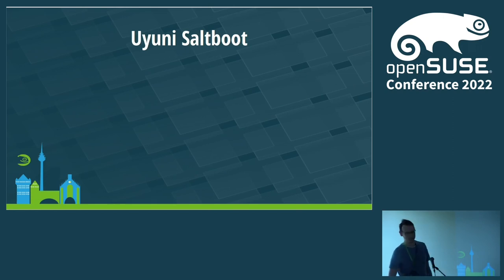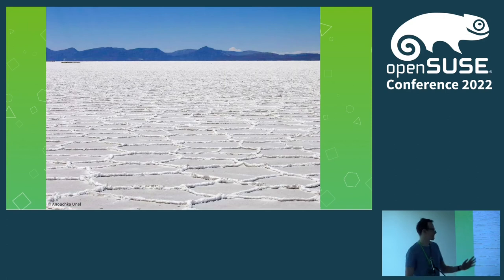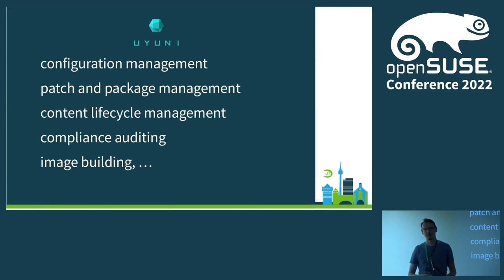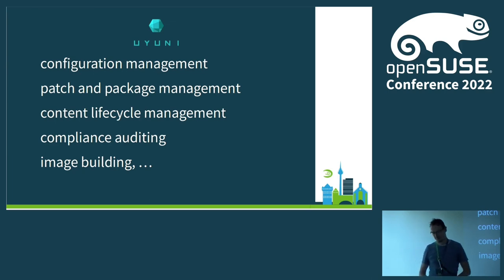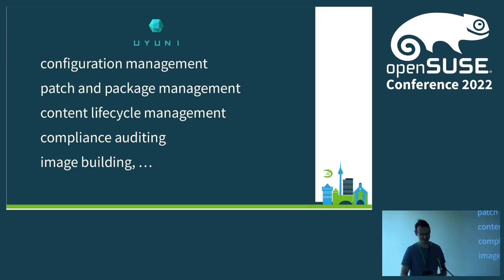So what is Uyuni? We did some digging — the Salar de Uyuni is the salt plain in Bolivia with interesting fauna and flora. That's actually why Uyuni is named as it is. Uyuni is a framework for managing individual machines, data centers, and servers. It includes configuration management and many other things. Originally based on Red Hat Spacewalk, it has since changed a lot, including adopting SaltStack for configuration management — which is why it's named Uyuni, after the salt lakes and salt deserts.